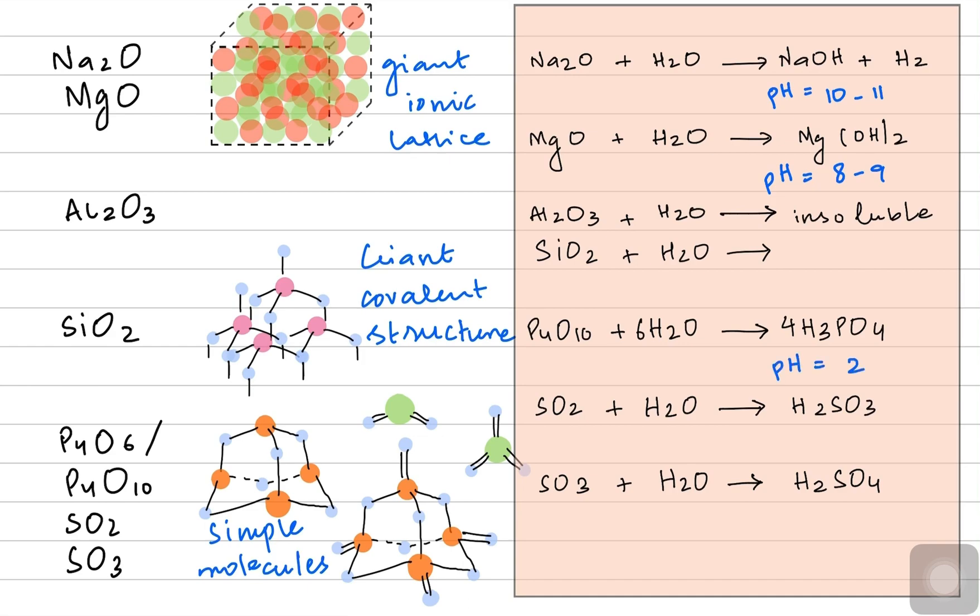Magnesium hydroxide is pH 9 because it's not really soluble. Phosphoric acid is a strong acid, so pH 2. And all the other acids here like sulfuric 4 and sulfuric 6 acid also give pH 2.